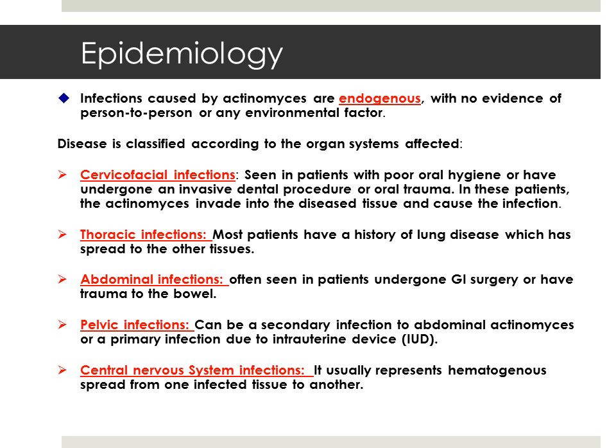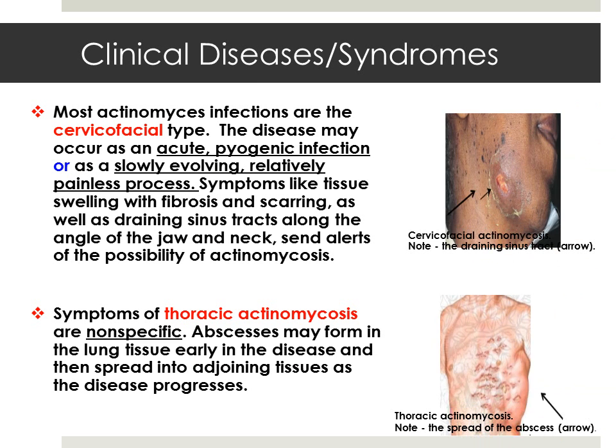Cervicofacial infections are seen in patients with poor oral hygiene or who have undergone an invasive dental procedure or oral trauma. Thoracic infections — most patients have a history of lung disease which has spread to adjacent tissue. Abdominal infections are often seen in patients who have undergone gastrointestinal tract surgery or had trauma to the bowel. Pelvic infections can be secondary to abdominal actinomycosis or a primary infection due to intrauterine devices. Central nervous system infections are the most serious, usually representing hematogenous spread from one infected tissue to another.